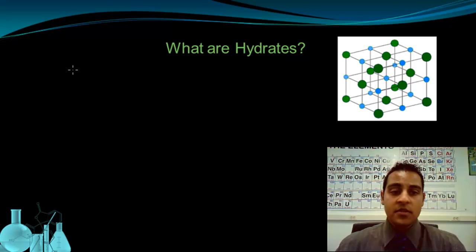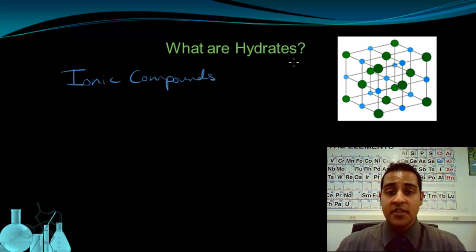So what are hydrates? Essentially, hydrates are ionic compounds. They're ionic salts. And we have an image over here that shows us the crystalline structure that ionic compounds form. You may remember seeing this from our video on ionic compounds. So hydrates are a particular kind of ionic compound that's able to trap water molecules inside this crystalline structure.